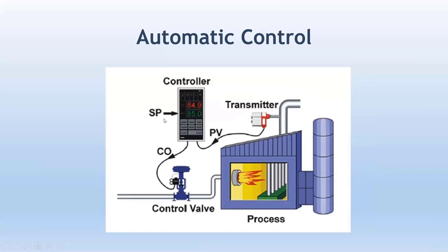The controller sees a set point — the set point is what you want. For example, the set point is 85 and the PV is 84.9. You are instructing the system: 'I want this temperature to be 85' — that is your set point. If PV is 50 and set point is 85, the difference between set point and PV is called error.